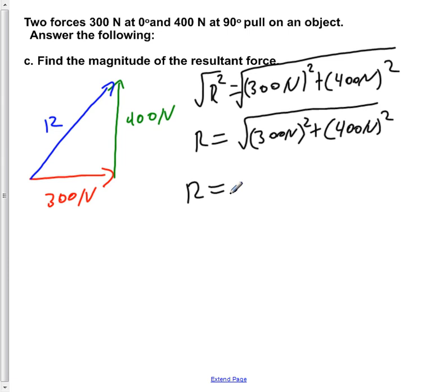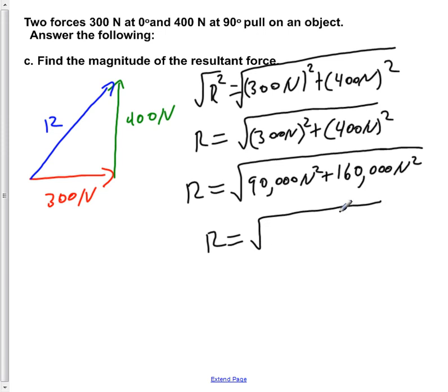We now square both of them. We would have R is equal to the square root of 90,000 square N plus 160,000 square N. We add those together. R is equal to 250,000 square N.